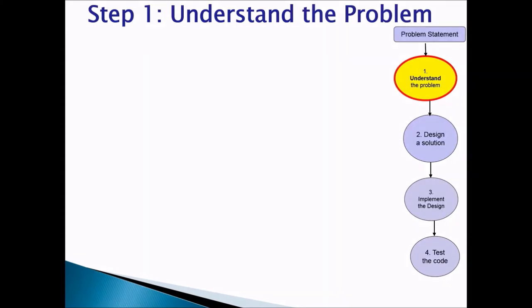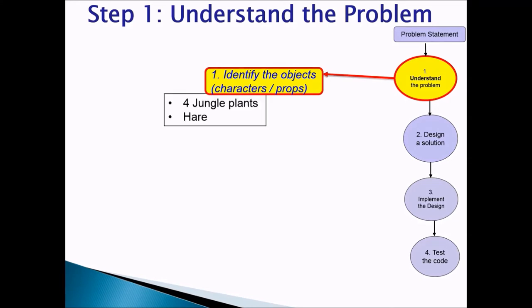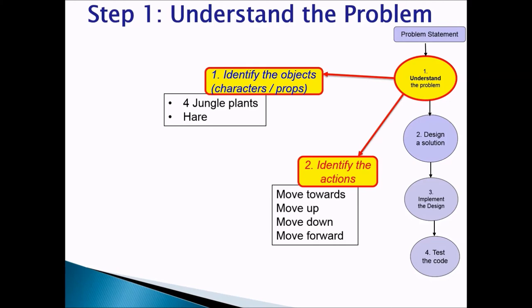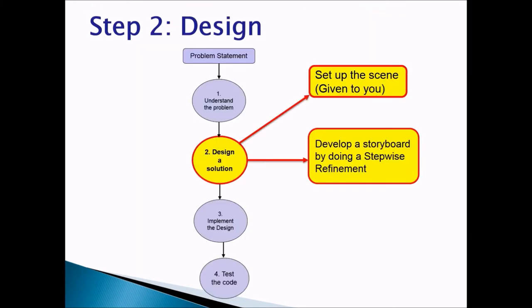Step one, understand the problem. When we talk about understanding the problem, we need to identify the objects, the characters, or the props needed in the scene. Now, this world is given to you already, so you know that we have four jungle plants, we have a hare, and you can add any biped object of your choice. The second thing is we need to identify the actions. When we saw the animation, we know that the hare is moving towards the jungle plant, the hare is moving up, moving down, moving forward.